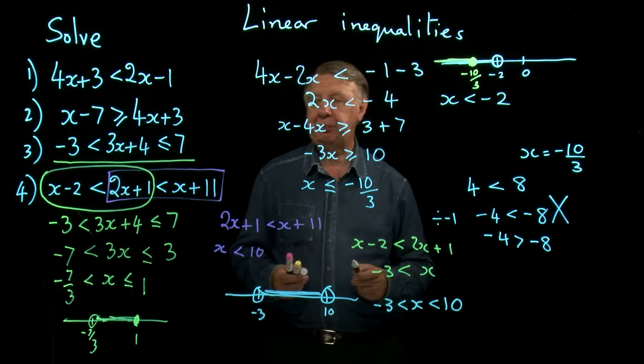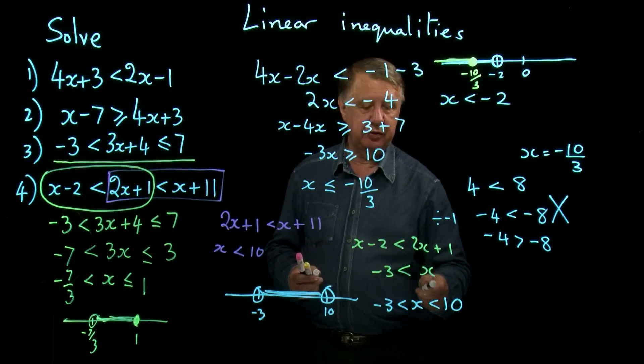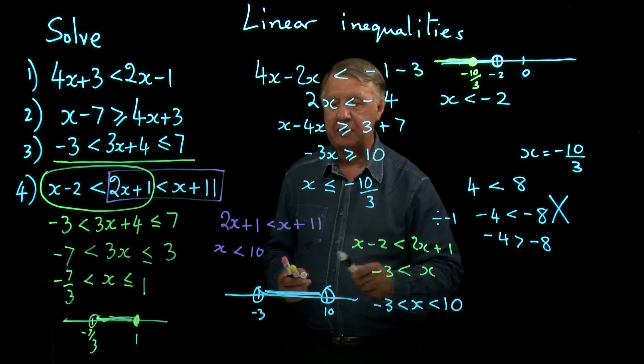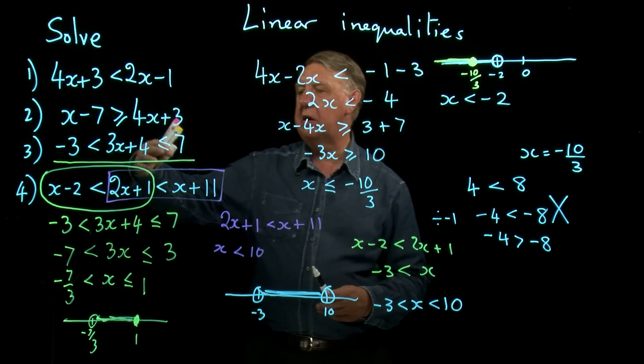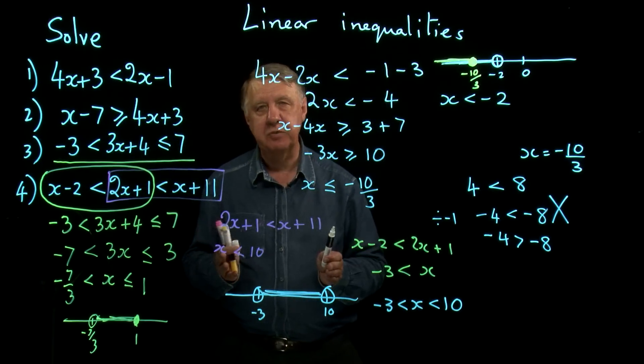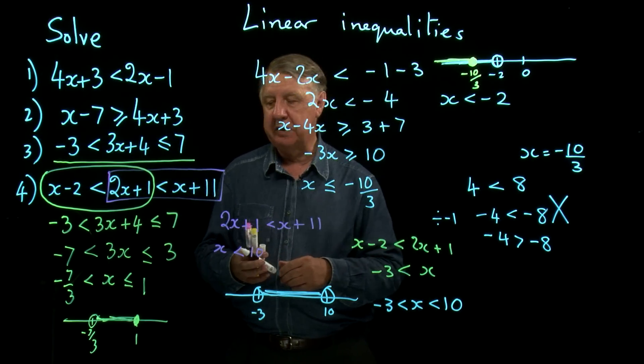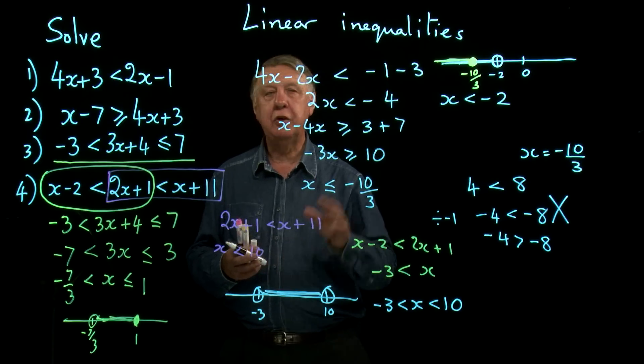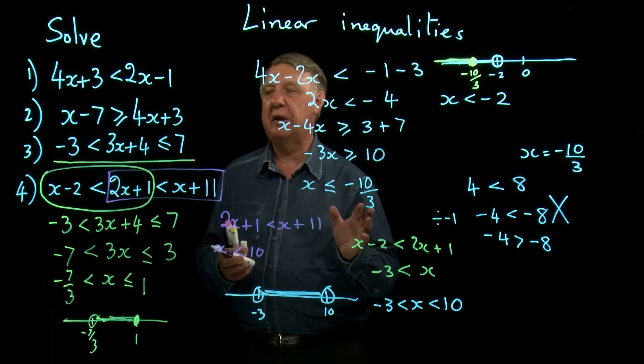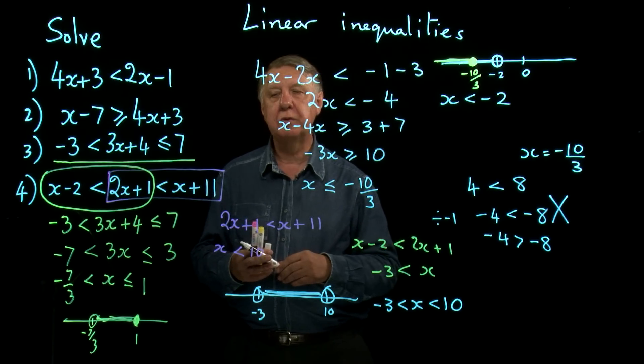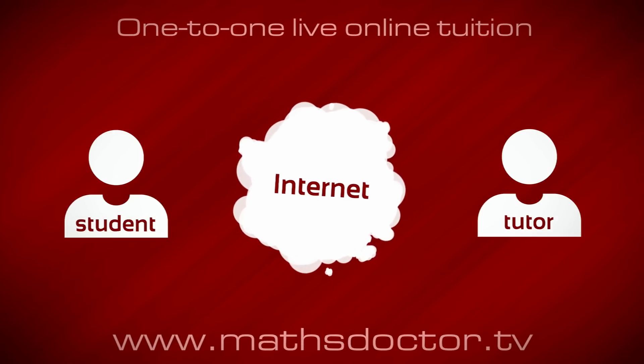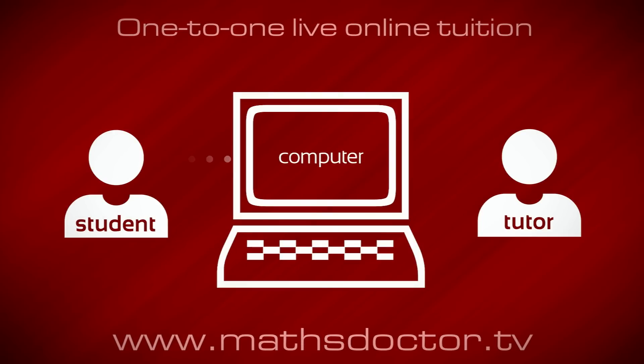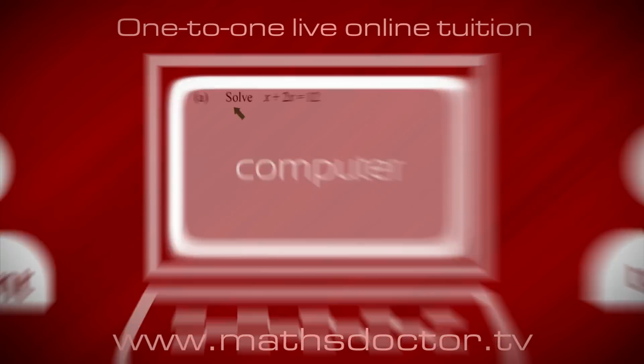Written out as an algebraic statement, that would be negative 3 less than x less than 10. So once again, the answer to this part is a sandwich. Okay, so those four examples really cover all of the types of linear inequality that you will meet in Core 1. Not difficult to solve, providing you follow the rules.